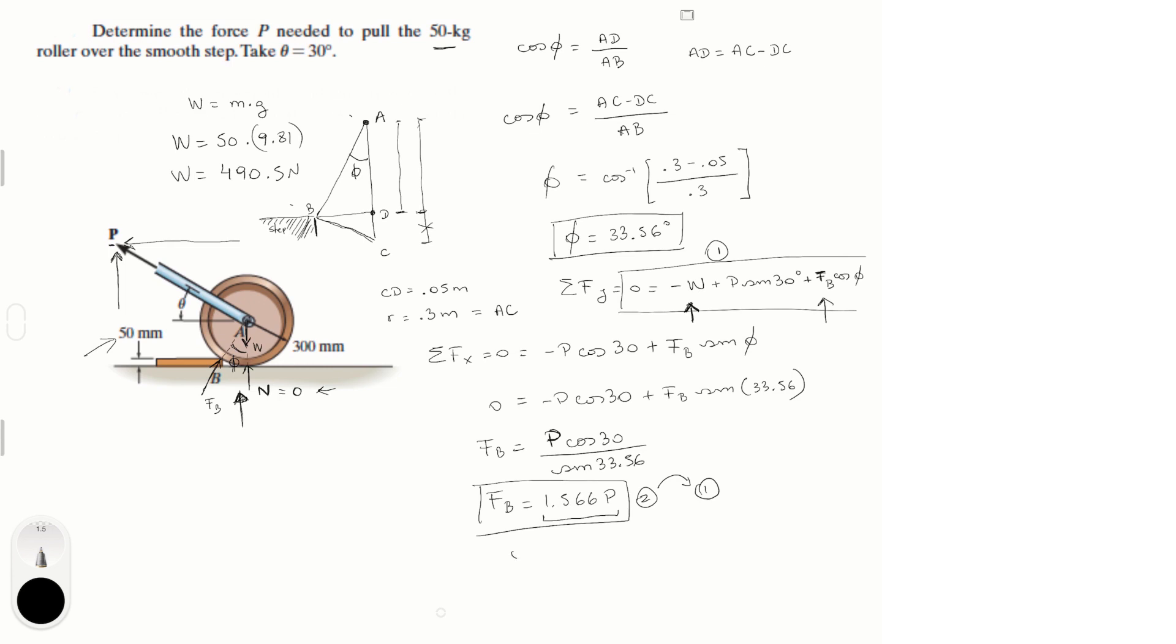And we get that 0 is equal to minus 490.5, which is W, plus sine of 30 times P, which is 0.5 P, plus F of B times the cosine of phi, which is 33.56. Also plug in phi right here. And you multiply that by 1.566 P. And you should get that this is equal to 1.305 P.